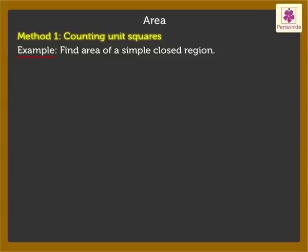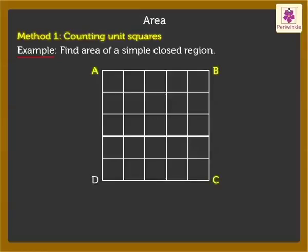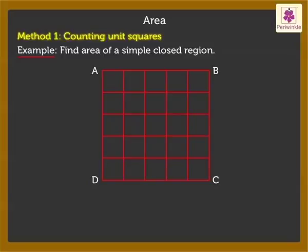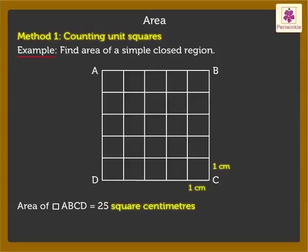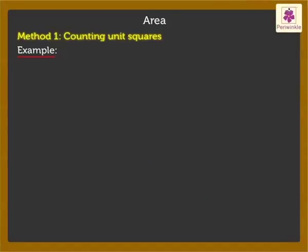Look at square ABCD. It is divided into 25 equal squares of side one centimeter each. Thus we say that the area of square ABCD is equal to 25 square centimeters. Square centimeters can also be written as sq cm in short.